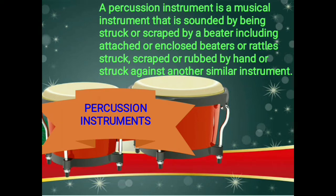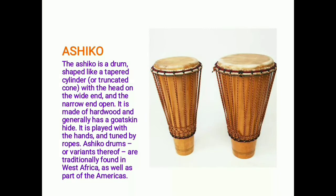Percussion instruments are musical instruments sounded by being struck or scraped by a beater, or struck, scraped, or grabbed by hand, or struck against another similar instrument. The ashiko is a drum shaped like a tapered cylinder or truncated cone, with the head on the wide end and the narrow end open. It is made of hardwood and generally has a goatskin head. It is played with the hands and tuned by ropes. Ashiko drums are traditionally found in West Africa as well as parts of the Americas.